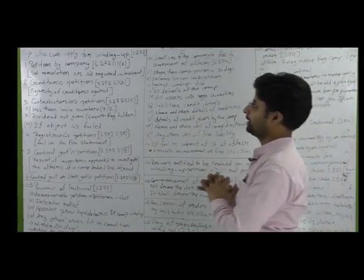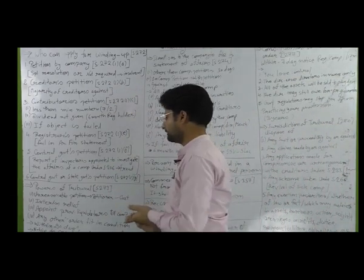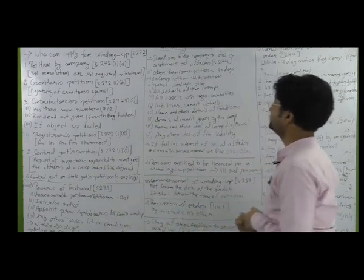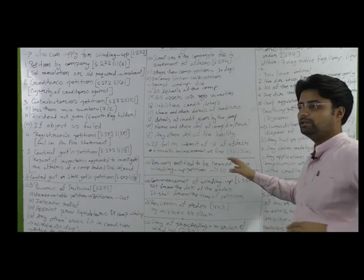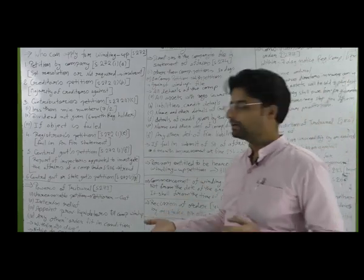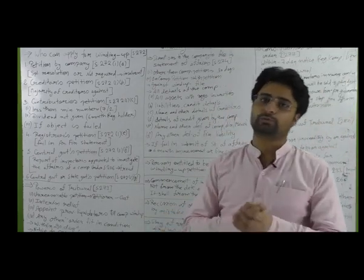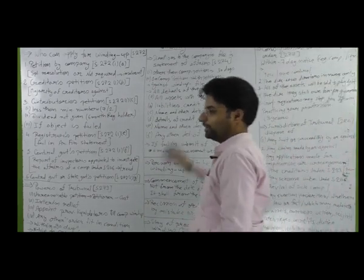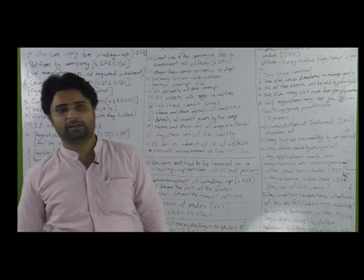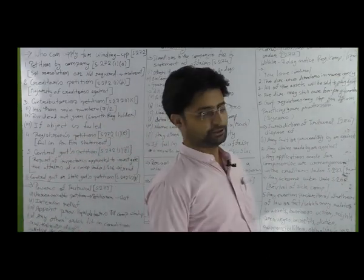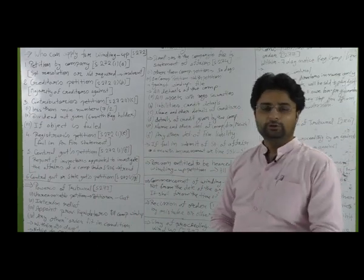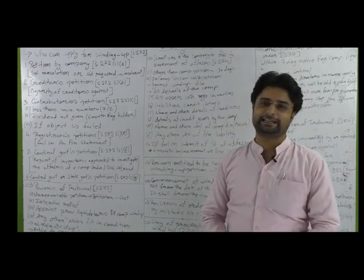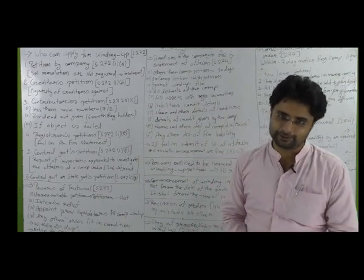तो आज के lecture में हमने पढ़ा कि कौन apply कर सकता है, अधिकरण की शक्तियाँ क्या होती हैं, statement of affairs क्या होता है, company के परिसमापन के बाद की कार्यवाही क्या है, क्या उस पर stay लाया जा सकता है, consequences — उसके परिणाम क्या होंगे — और अधिकरण का अधिकारक्षेत्र क्या है। I hope you understand and like it also, thank you.